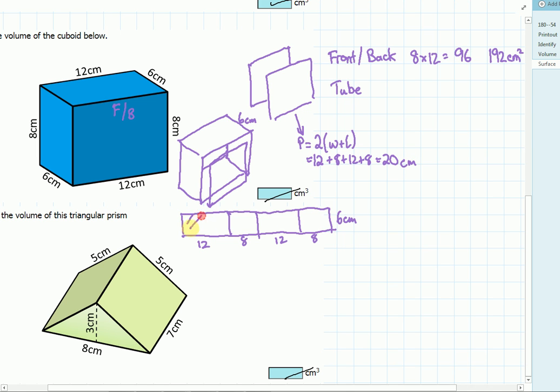So the area of all of this, the area of the tube is the perimeter multiplied by the length. That perimeter is forty centimeters and the length of the shape is six. And that is twenty, twenty, twenty, forty, sorry.